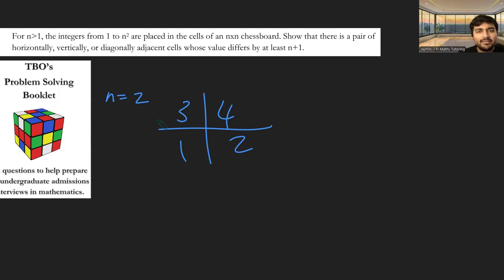And we want to show that there's a pair of numbers, either horizontally, vertically, diagonally, whose values differ by at least n plus 1. So if n is 2, 2 plus 1 is 3. So I need to show that there's a pair of digits that differ by at least 3. Well, 1 and 4 do the job here.